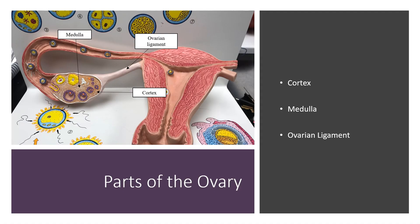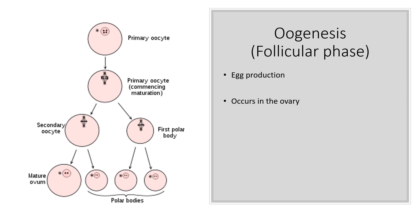Beginning with parts of the ovary, you have the outer portion, which is the cortex, the inner portion is the medulla, and you also have the ovarian ligament. Within the ovary is the process of egg production — this is called oogenesis. You'll sometimes refer to it as the follicular phase, because here you have the development of the follicles and the oocytes.